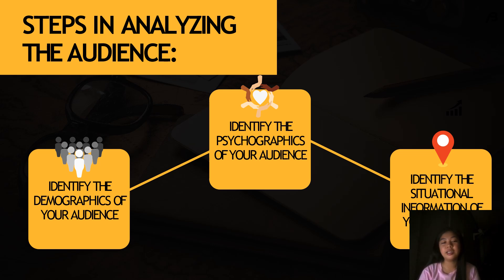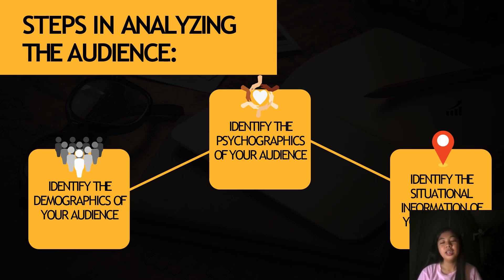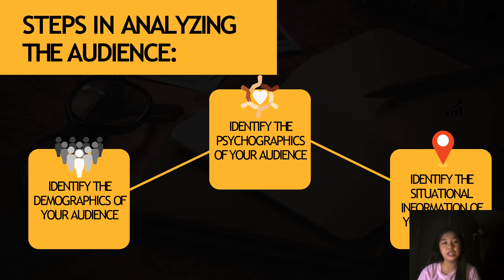Here are the steps in analyzing the audience. First, identify the demographics — age, education level, and so on. You also have to identify the psychographics and situational information of your audience. Identifying demographics involves understanding key characteristics such as age, gender, education level, income, occupation, cultural background, and geographic location. These demographic factors provide valuable insights into the preferences, interests, and perspectives of your audience to help you tailor your message effectively.